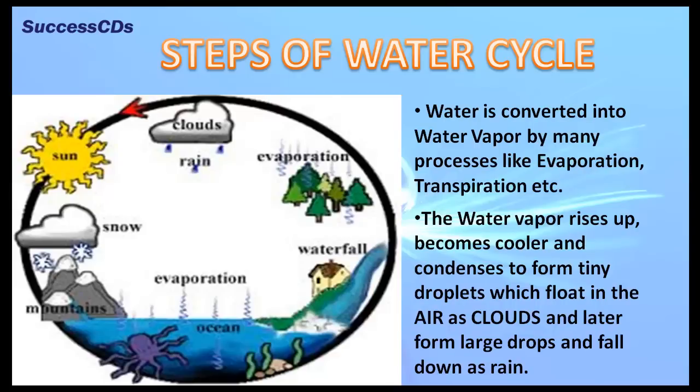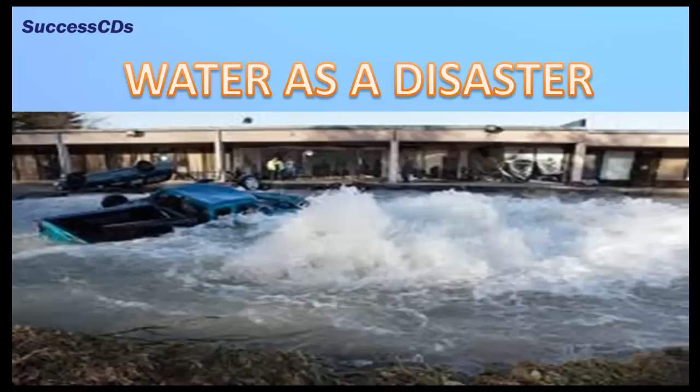The water vapor rises up, becomes cooler, and condenses to form tiny droplets which float in the air as clouds. Later, these form large drops and fall down as rain.